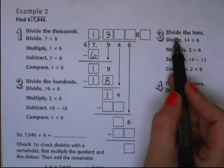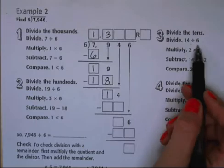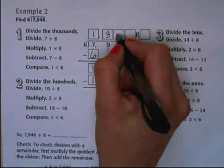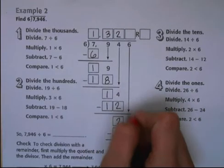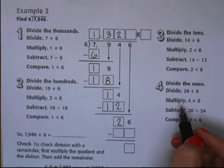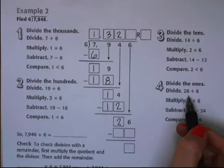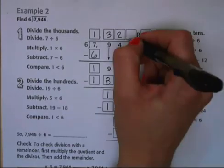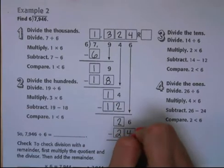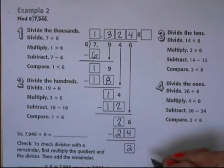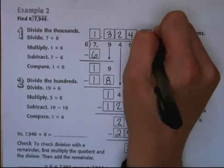Step three, we're going to divide the tens. 14 divided by 6. We know 6 times 2 is 12. Subtract 12. We're left with 2 and bring down our 6. And very last, we're going to divide the ones. So we have 26 divided by 6. 6 times 4 is 24. When we subtract, we have 2, which gives us a remainder of 2.